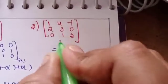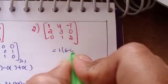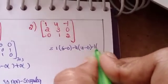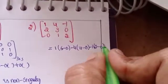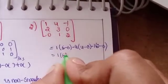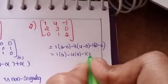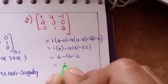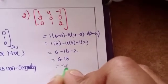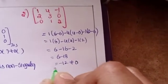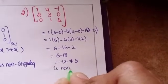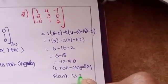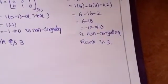For the second problem, the determinant is 1 into (6 minus 0) minus 4 into (4 minus 0) minus 1 into (2 minus 0), giving 6 minus 16 minus 2, which equals 6 minus 18 = minus 2. Since it is not equal to 0, it is non-singular and the rank is 3.